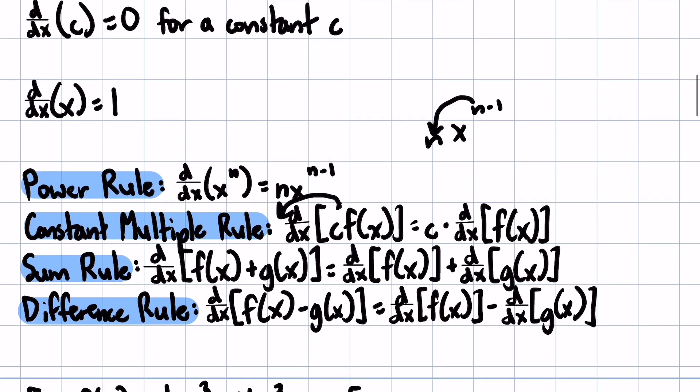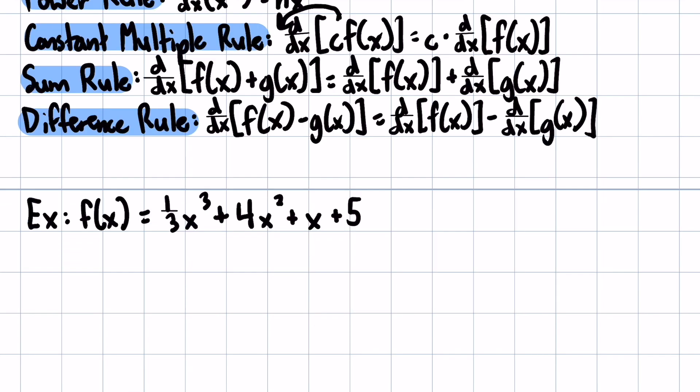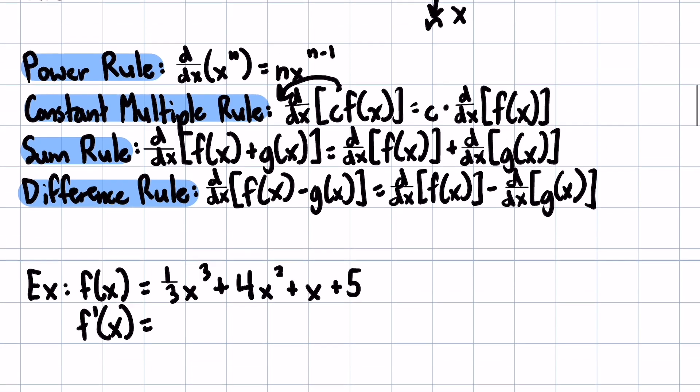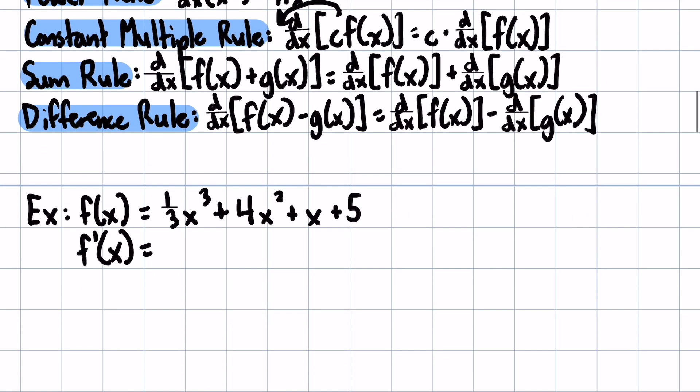So we're going to see some of these rules in action with this first example. So we're taking the derivative of this function. So f prime of x, what we're able to do is split this into four separate derivatives. So I'm going to take first the derivative of 1 third x to the third. This is going to be the power rule. So we bring down the three.